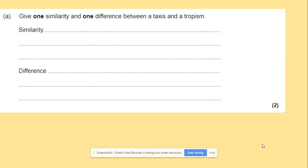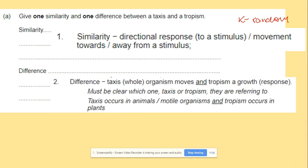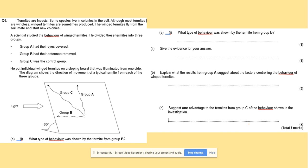A key similarity and difference: taxis is a directional response, and tropism is the same — movement towards or away from a stimulus. Kinesis, by contrast, is a random movement. The difference between taxis and tropism is that taxis is the movement of the whole organism, whereas tropism involves the growth of a plant. Kinesis is also the movement of the whole organism, same as taxis, so it is not a tropism.